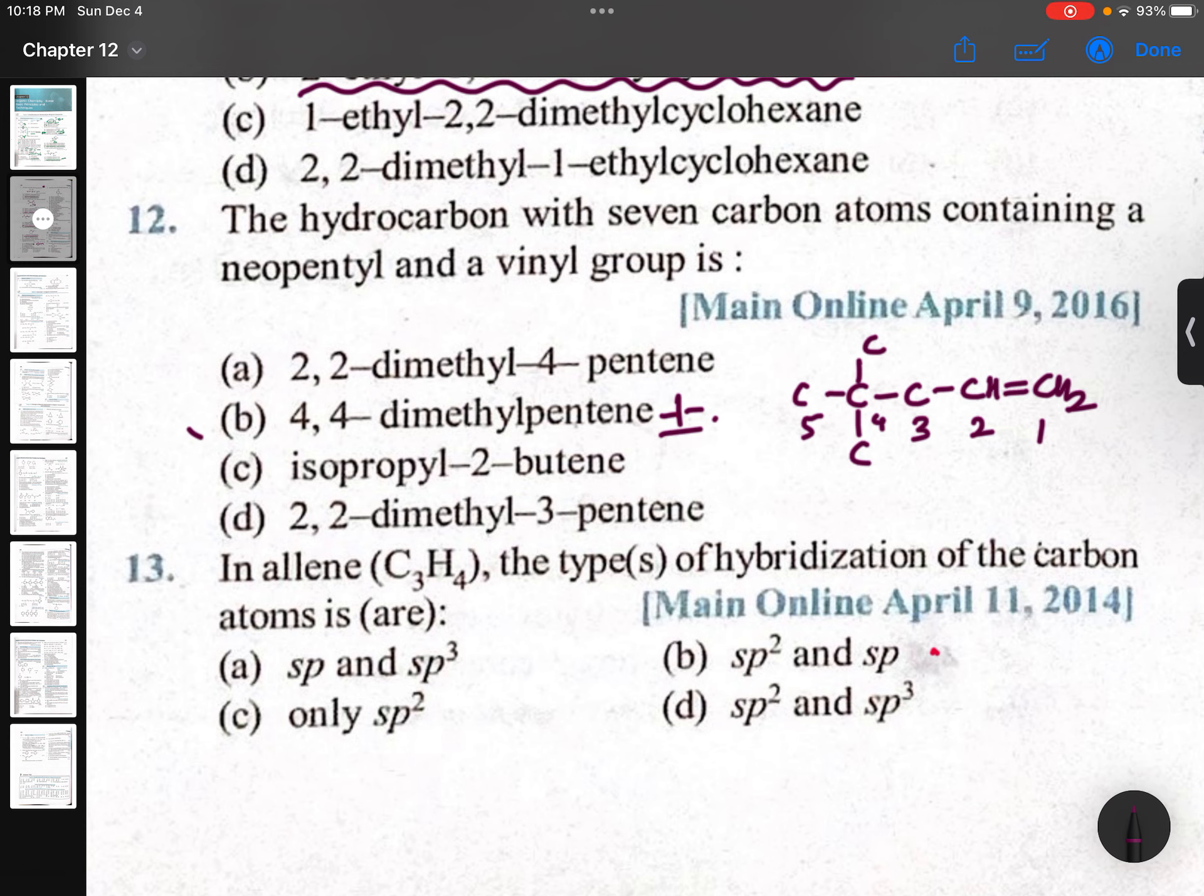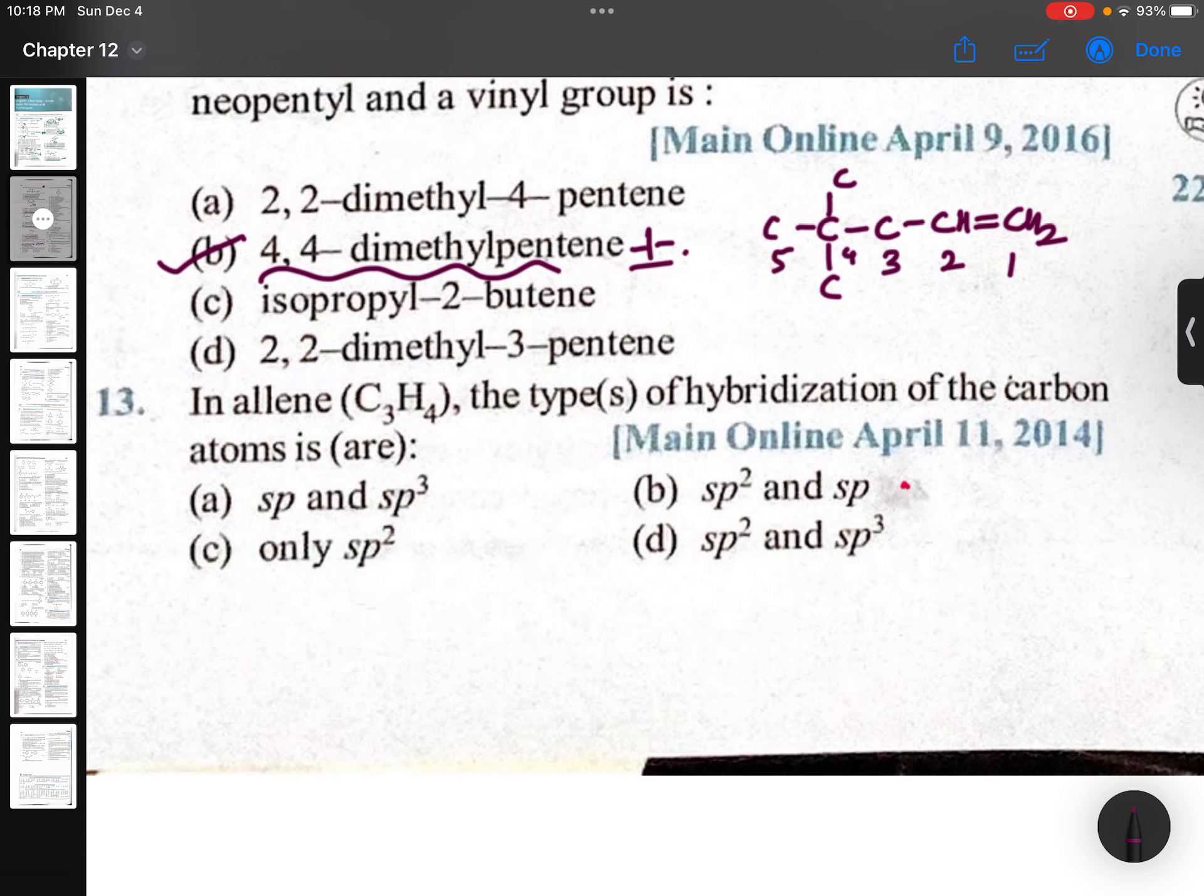In allene, C3H4, the types of hybridization of the carbon. Allene means CH2=C=CH2. It is like this: it is sp² carbon, this is sp carbon, this is sp² carbon.